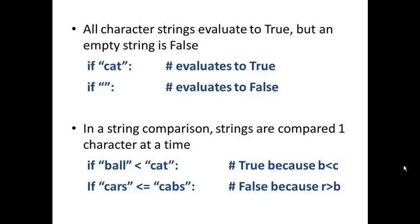You can also do comparisons between strings using the comparison operators. For example, if "ball" < "cat", this is going to return true because b is less than c. It's going to compare one character at a time starting from the leftmost character. If "cars" <= "cabs", this returns false because it will compare c to c, a to a, and then r to b, and it's going to return false because r is greater than b.